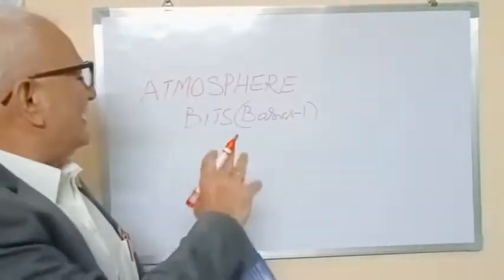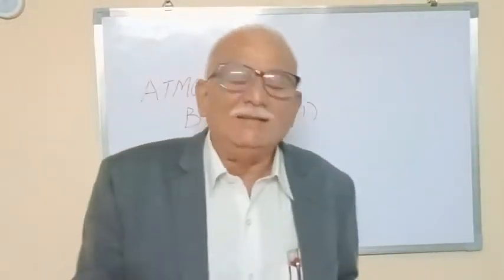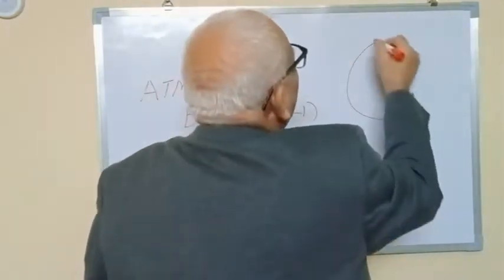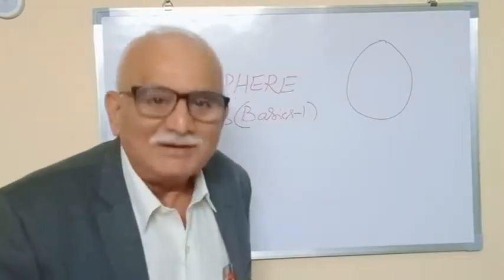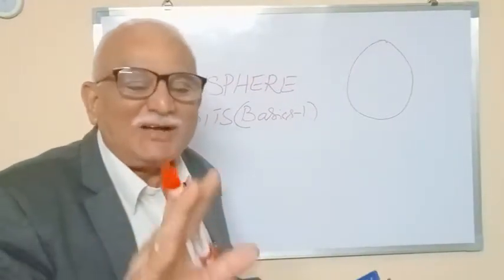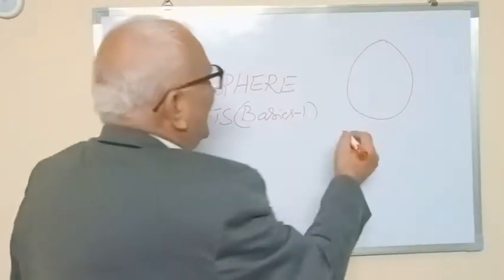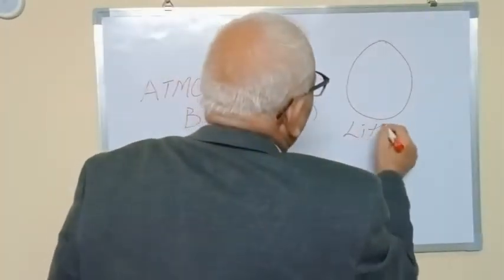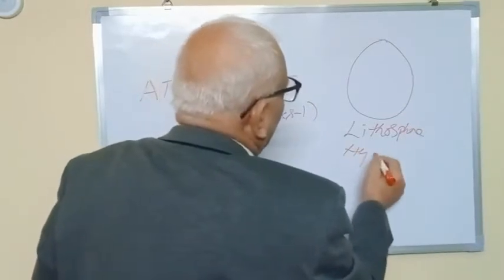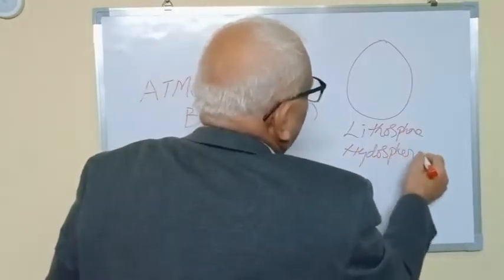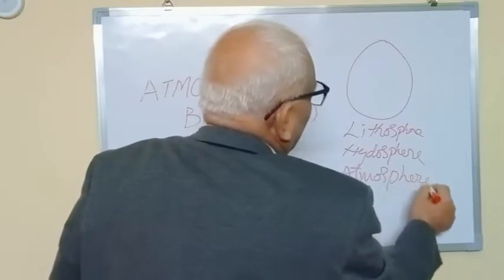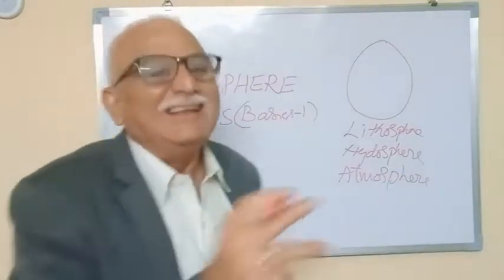The basic atmosphere we discussed in this class — the bits start like this: the earth is elliptical in shape. The solid portion of the atmosphere is known as lithosphere (L-I-T-H-O, lithosphere). The water portion is known as hydrosphere, and the gaseous portion of the earth is known as atmosphere.